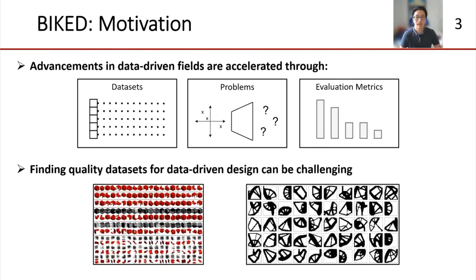Many researchers actively engaged in the field of data-driven design would probably agree that finding quality data on which to develop, test, and benchmark new methods is difficult. We have 3D model datasets like ShapeNet and ModelNet, as well as topology optimization datasets. However, these datasets have drawbacks that limit the scope of their applications. 3D model datasets tend to be more conducive to research focusing on aesthetics or appearance rather than form and function, while topology optimization datasets are difficult to extend to any design problems with a scope larger than localized geometry and structure.